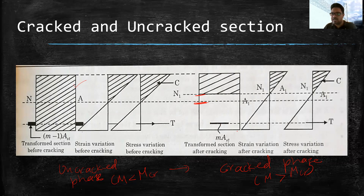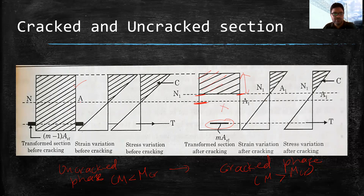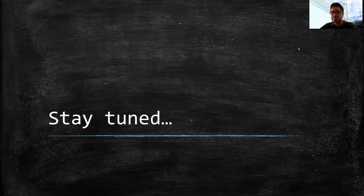I hope you understand the concept. After cracking, the concrete portion above the neutral axis takes compression, and below the neutral axis only the steel is active taking the tension — all other concrete below NA is cracked and is not taking the tension. While in the uncracked phase, below the neutral axis also the concrete is hatched, meaning the whole section is effective in resisting the tension. We will continue our discussion in the next part. Thank you.